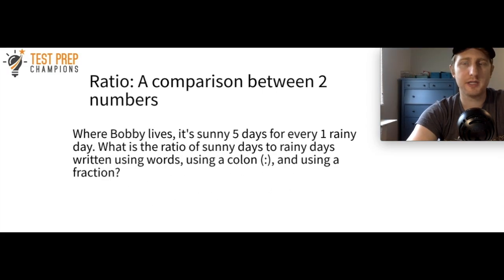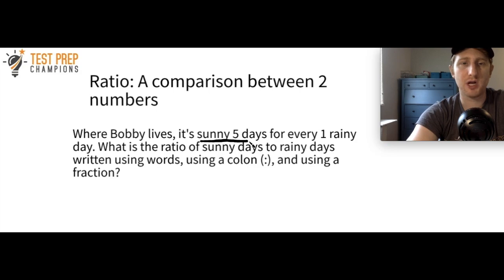Here's an example. Where Bobby lives, it's sunny five days for every one rainy day. What is the ratio of sunny days to rainy days, written using words, using a colon, and using a fraction? I'd like you to take this information and practice writing the ratio in all three forms.